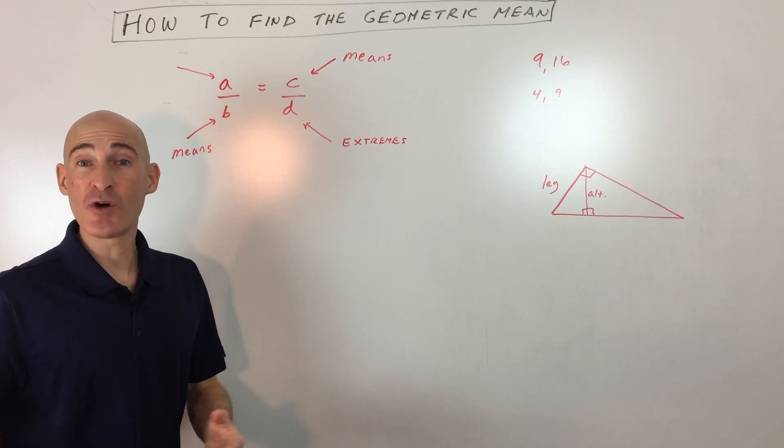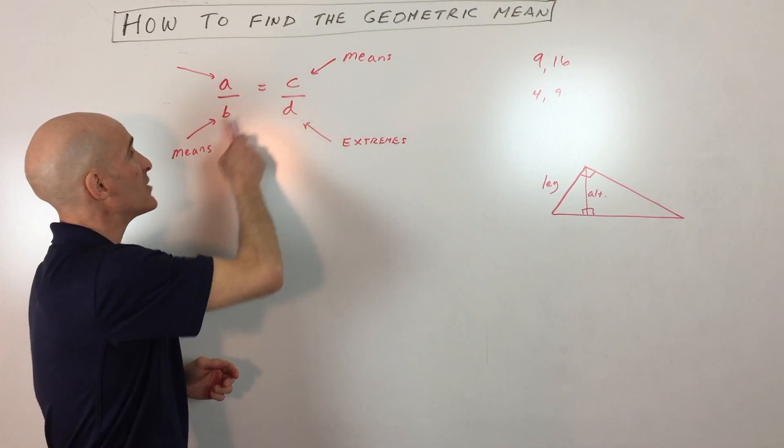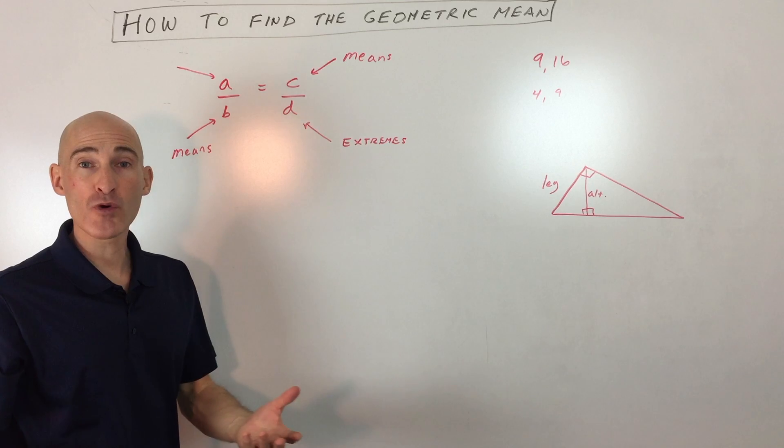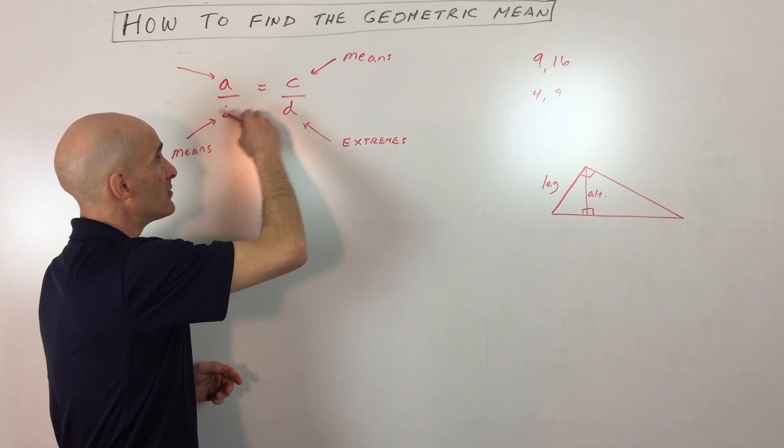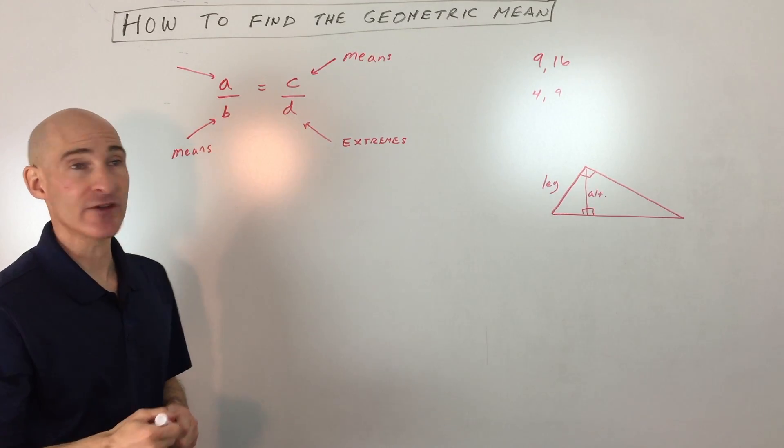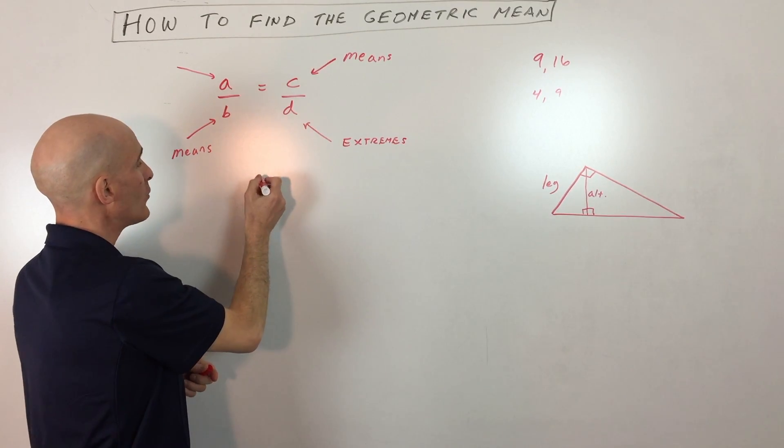In your math class, something called cross-multiplying, right? So when you have a ratio equal to a ratio, that's called a proportion, and the way that you would solve it is you would multiply in the diagonal, and that is equal to the product of the other diagonal multiplied together.